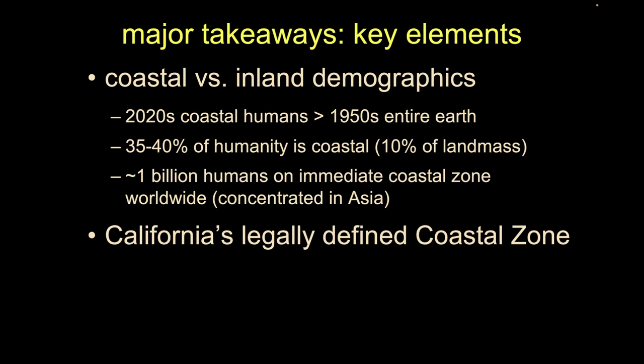There are clear differences between people inland and people at the coast. By the time we hit the 2020s, there are more people living just on the immediate coastal fringe of our planet than existed on all of the earth in the 1950s. So there's a lot of people in this relatively small area.